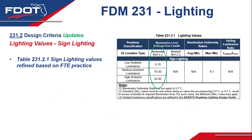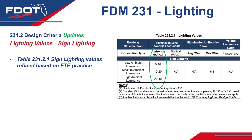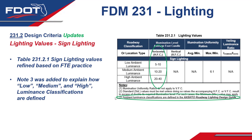Next, continuing with Table 231.2.1, sign lighting values have now been refined based on the Florida Turnpike Enterprise practice. With their many lane miles of limited access facilities, they've become experts at lighting roadside signs in many different conditions. These have now been broken down into three categories: low ambient luminance, medium, and high ambient luminance. Note 3 was added to explain how low, medium, and high luminance classifications are defined, which you can find in the notes section at the bottom of the table.